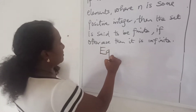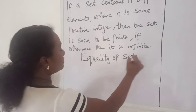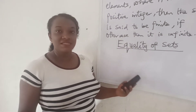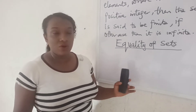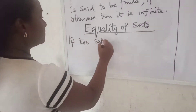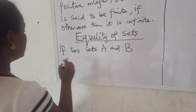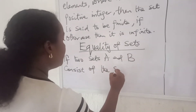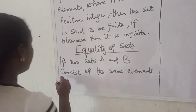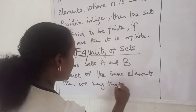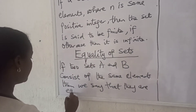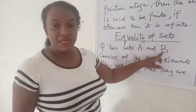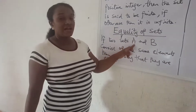Now let's go to equality of sets. If you have two sets A and B, and those two sets consist of the same elements, then we say that those two sets are equal. This means that all the elements in set A can be found in set B, and all the elements in set B can equally be found in set A.